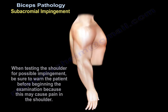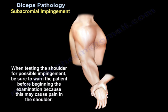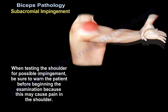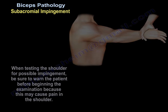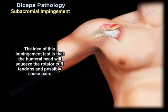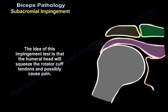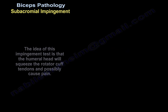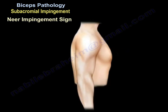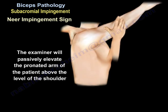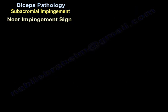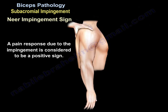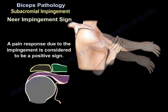When testing the shoulder for possible impingement, make sure to warn the patient before beginning the examination, because this may cause pain in the shoulder. The whole idea of the impingement test is that the humeral head will squeeze the rotator cuff tendon and possibly cause pain. For the Neer impingement sign, the examiner will passively elevate the pronated arm of the patient above the level of the shoulder. A pain response due to the impingement is considered a positive sign.